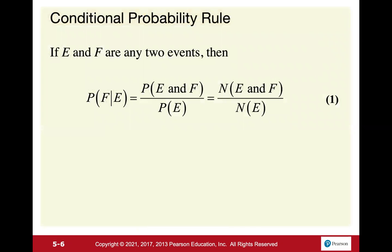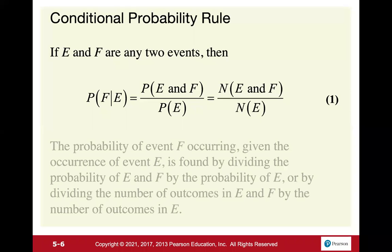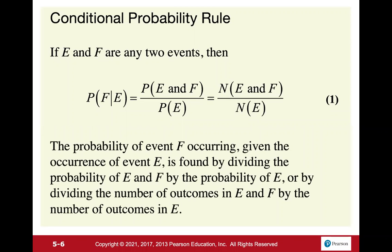With conditional probability, if E and F are any two events, then the probability of F given E equals the probability of E and F divided by the probability of E. In other words, the probability of event F occurring given event E is found by dividing the probability of E-and-F by the probability of E, or equivalently by dividing by the number of outcomes in E.